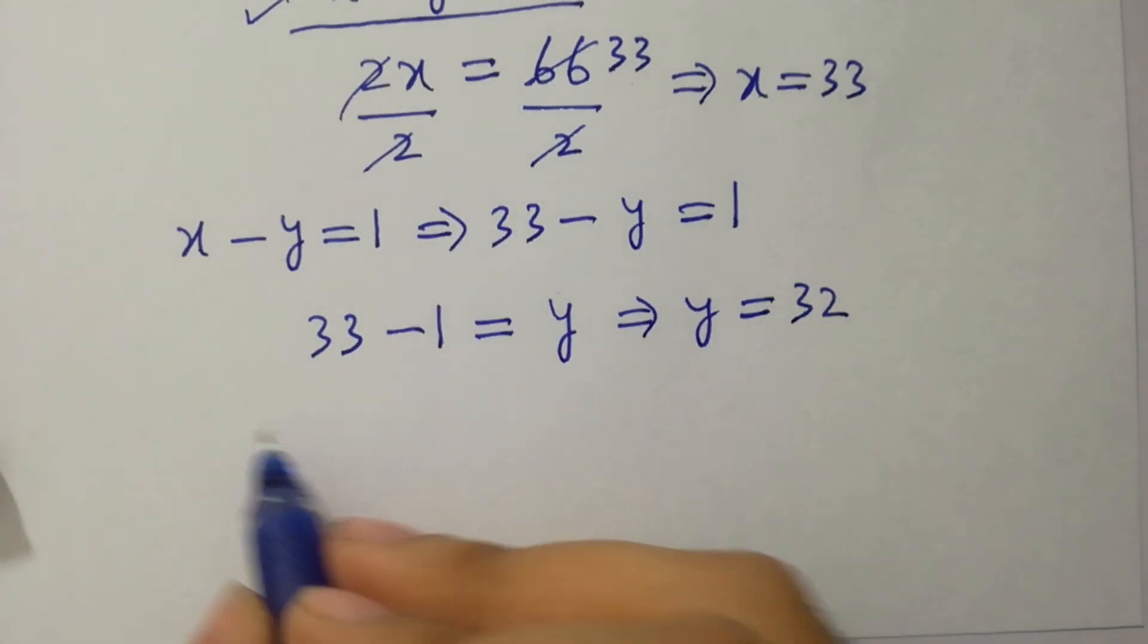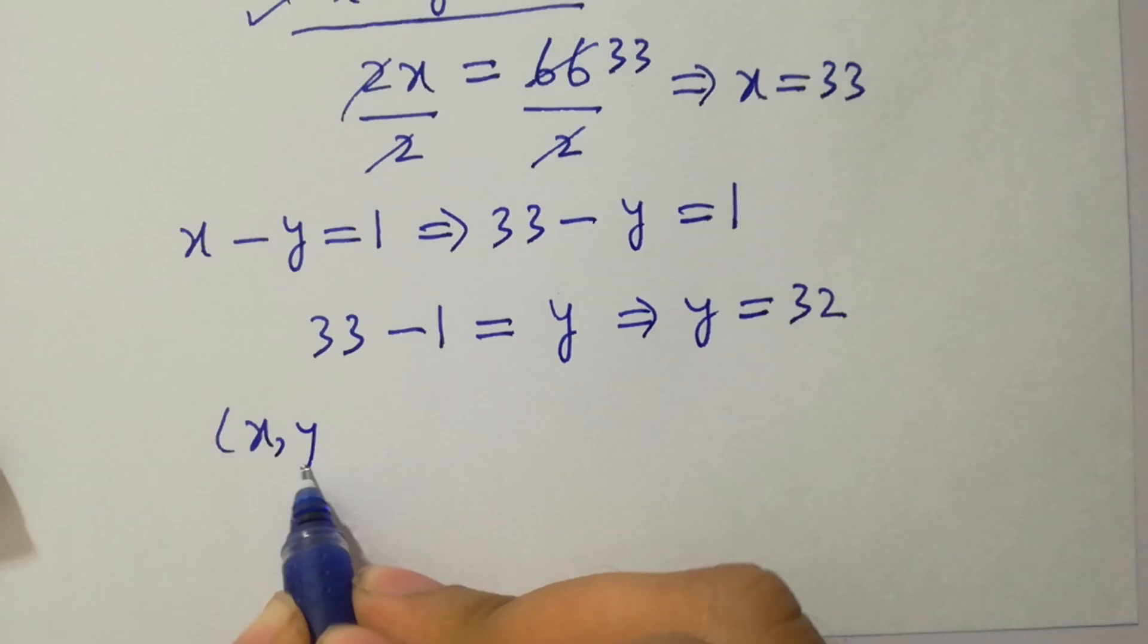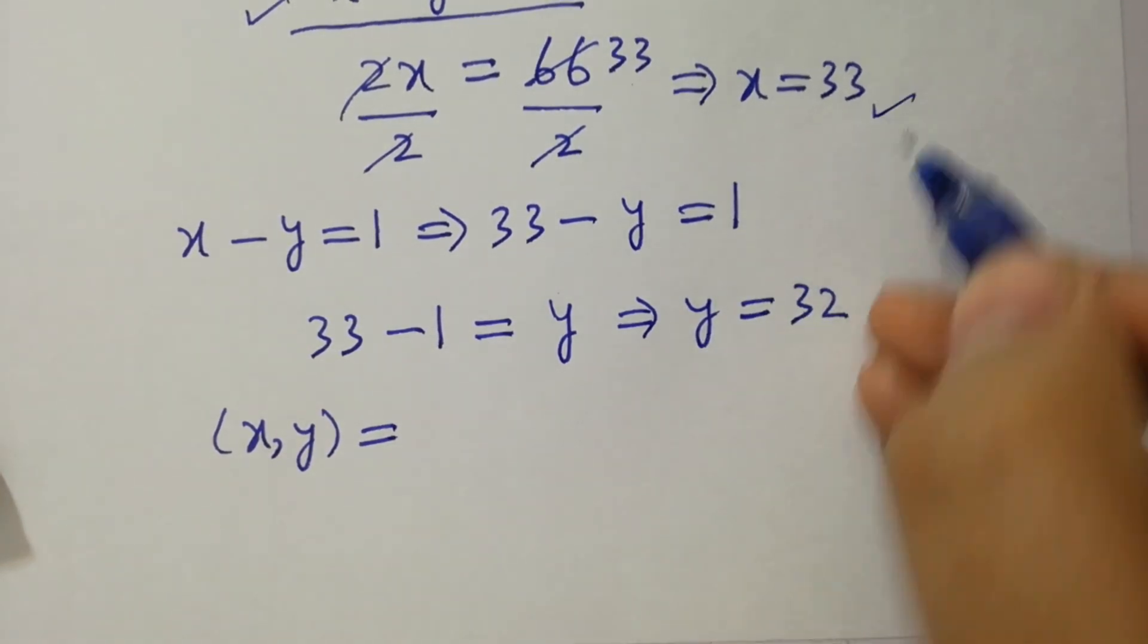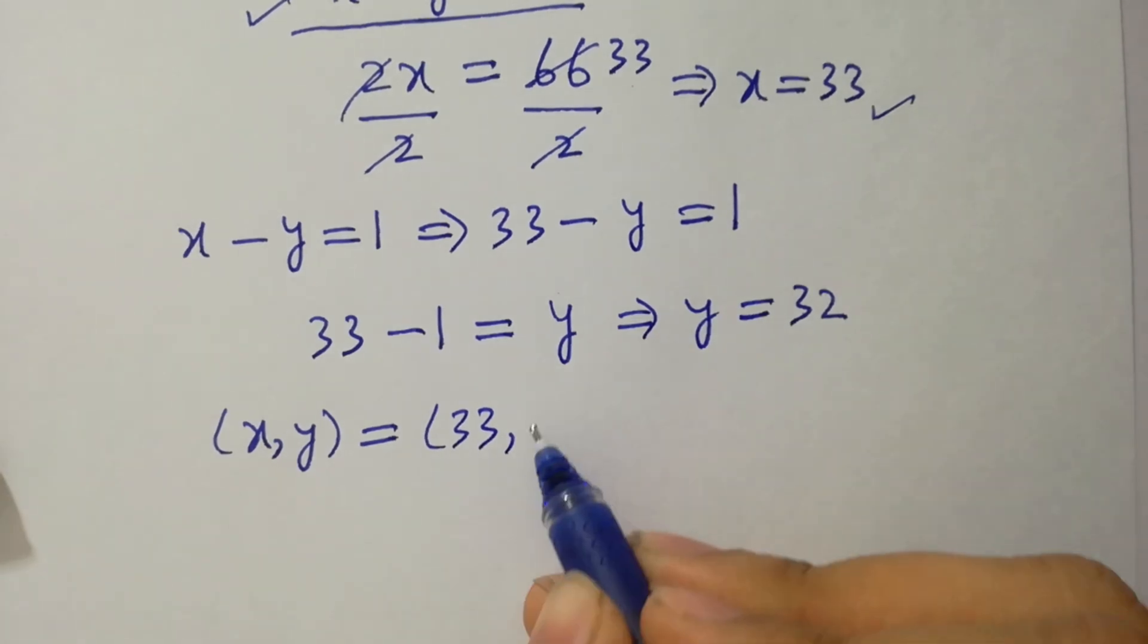So we have y equal to 33 minus 1 is 32. So values of x and y are 33 and 32.